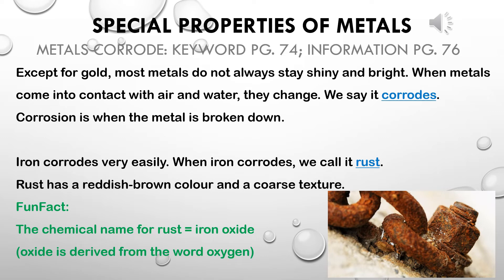Except for gold, most metals don't always stay shiny and bright, especially when left outside. When they come into contact with air or water, they change — and this change is called corrosion. The one important metal we need to focus on is iron, because iron corrodes very easily. When iron corrodes, we call it rust.